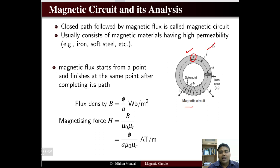L is the average length of the magnetic circuit and A is the area of the cross section. Now if a coil having N turns and carrying a current I is used to excite this magnetic material, a flux will be established in the magnetic material, which has an iron core with a relative permeability mu_r.